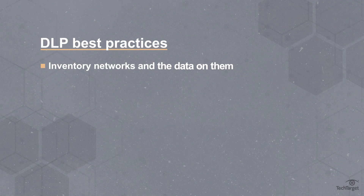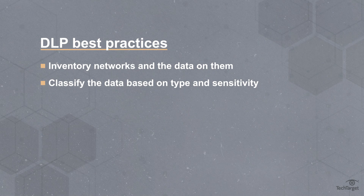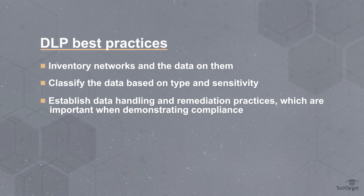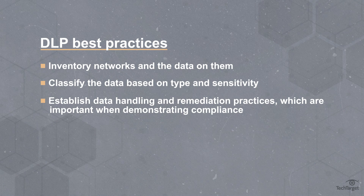First, inventory the assets on their networks and the data on them. Second, classify the data based on type and sensitivity — DLP software can automate this step with artificial intelligence. Third, establish data handling and remediation practices, which are important when demonstrating compliance with data security regulations like GDPR and CCPA.